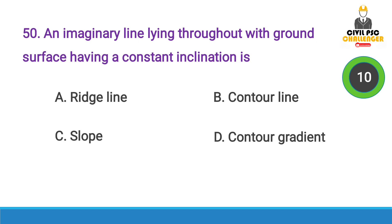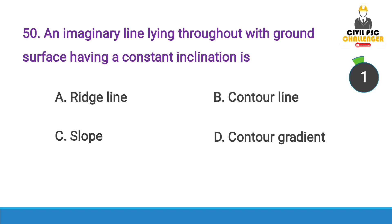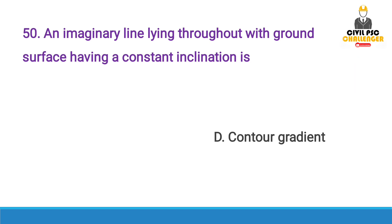Next question: An imaginary line lying throughout on the ground surface having a constant inclination is — Answer option D, Contour Gradient.